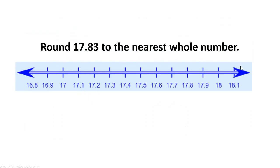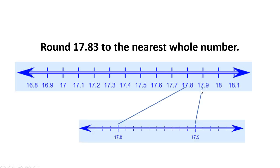This one is also rounding to the nearest whole number, but we're rounding the number seventeen and eighty-three hundredths. This is a little trickier to find on this number line because the number line is counting by tenths, but the number I'm trying to place actually has hundredths. So the first thing I need to do is figure out about where this would fall. This part right here is seventeen and eight tenths, and then it's got three more hundredths past that. So it's going to fall in between seventeen and eight tenths and seventeen and nine tenths. So I'm going to zoom in on that part of the number line — we know that in between those tenths are the hundredths. I can think about this as eighty hundredths and this one as ninety hundredths. And then in between that I would count eighty-one, eighty-two, and that's where seventeen and eighty-three hundredths would fall.